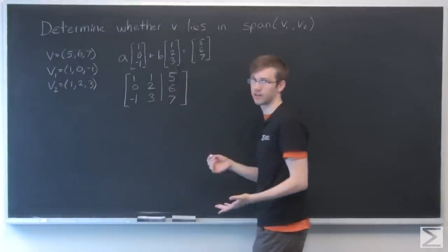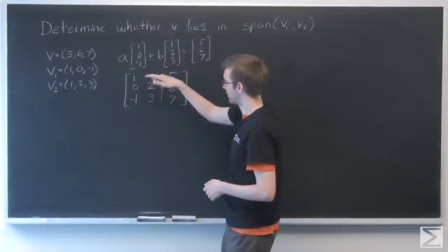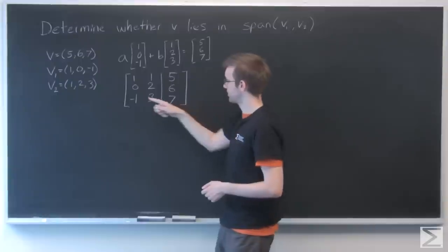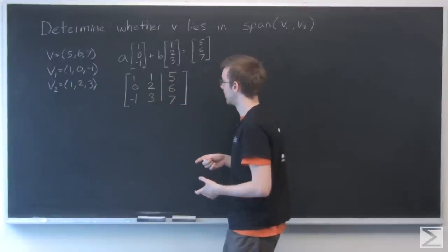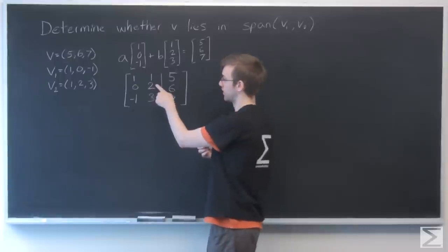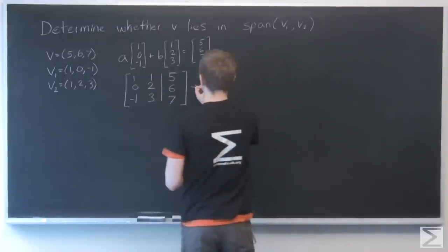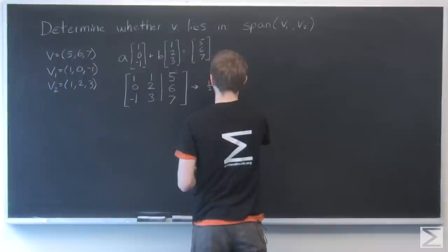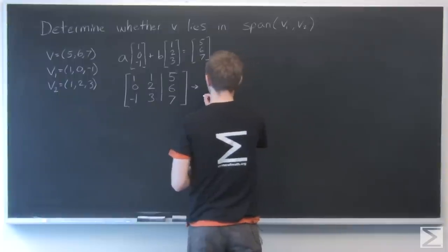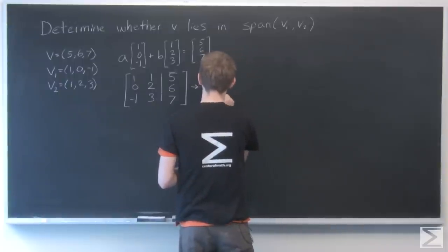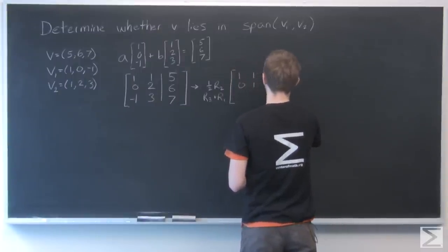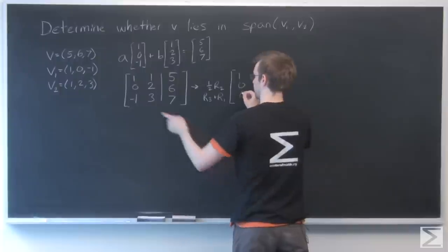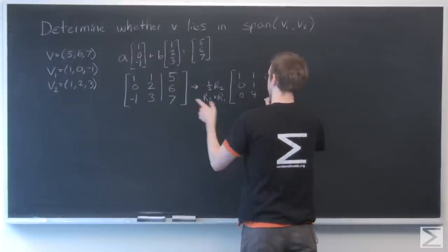So going through our Gauss-Jordan elimination, I can add these first and third rows because this 1 and this minus 1 are going to cancel out. I'm also going to divide this row by 2 so I can get a 1 right here. So I'll have ½ row 2 and row 3 plus row 1. That's 1, 1, 5; 0, 1, 3; and 0, 4, 12.